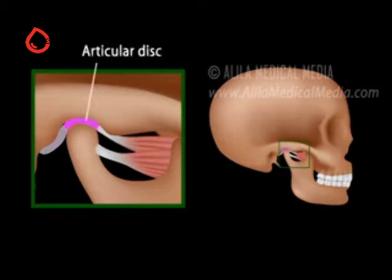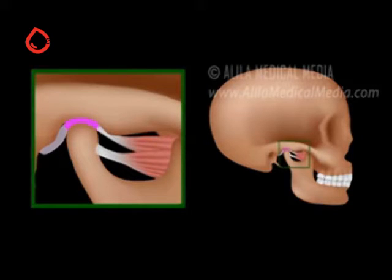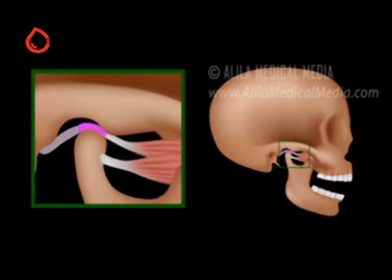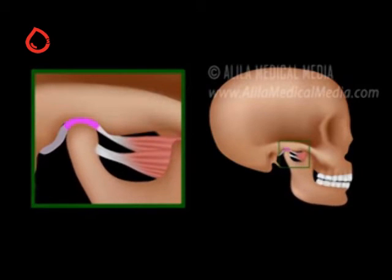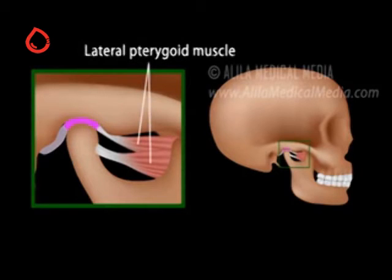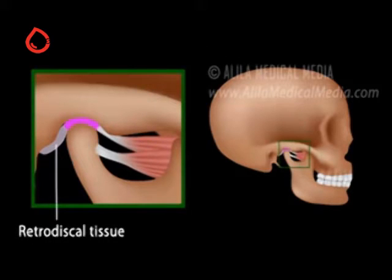The unique feature of the TMJ is the articular disc, a flexible and elastic cartilage that serves as a cushion between the two bone surfaces. The disc lacks nerve endings and blood vessels in its center and therefore is insensitive to pain. Anteriorly, it attaches to the lateral pterygoid muscle, a muscle of chewing. Posteriorly, it continues as retrodiscal tissue fully supplied with blood vessels and nerves.